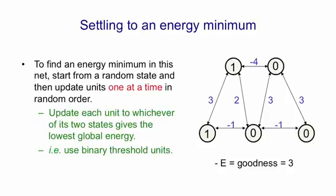Let's probe one more unit. This unit is more interesting. It's getting an input of one times two plus one times minus one plus zero times three plus zero times minus one so that's a total input of one so it will now turn on. Previously it was off and so when it turns on the global energy changes. We now have a global energy of minus four or goodness of four and that's a local energy minimum. If you now try probing any of the units you'll see that they don't want to change their current state. The net is settled to a minimum.